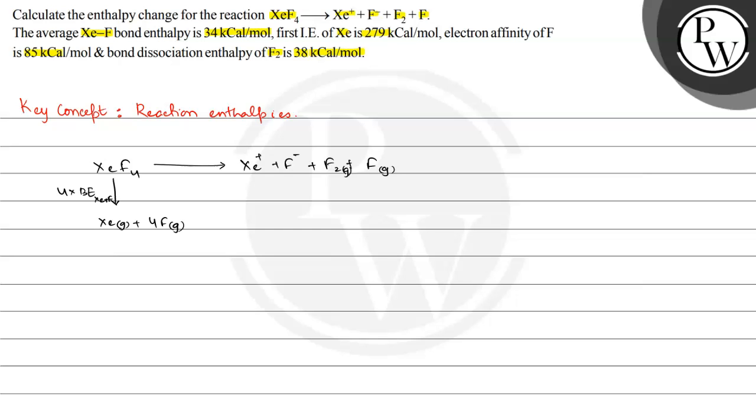To get Xe gas plus 4F gas. From that, for Xe gas we need to provide the ionization enthalpy in order to get Xe plus. And if we have 4F gas, we split them into F gas plus 2F gas plus 2F gas plus another F gas.